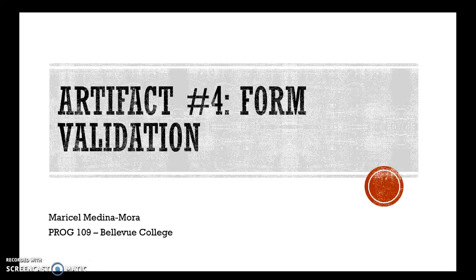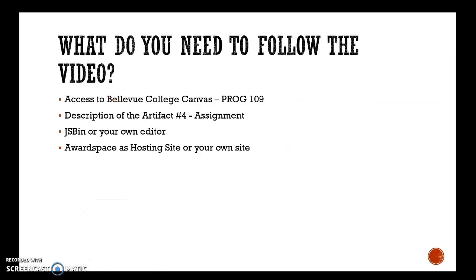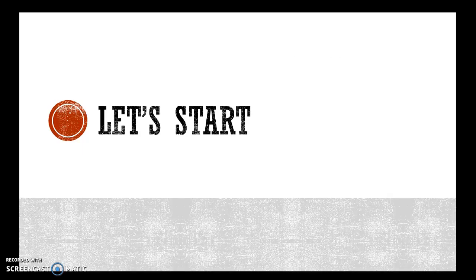Hi, this is Marisol Medina, your instructor for PRO 109. In this video I'm going to show you how to start the form validation for artifact number four. So as you can see, this is the original form that I provided through the assignment, and what needs to happen is if the user hits submit and we are not actually providing any data, we need to show error messages. And we are going to do that with JavaScript. So what do you need in order to follow me through this video? You need to have access to Bellevue College, you also need to have the description of artifact number four for the assignment, you need to have your JSBin or your own editor, and of course the hosting site to upload your web page. So let's start.